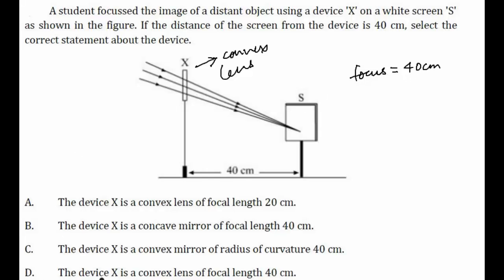Hence option D says that the device X is a convex lens of focal length 40 centimeters, which is matching with our conclusion. So option D is the correct answer.